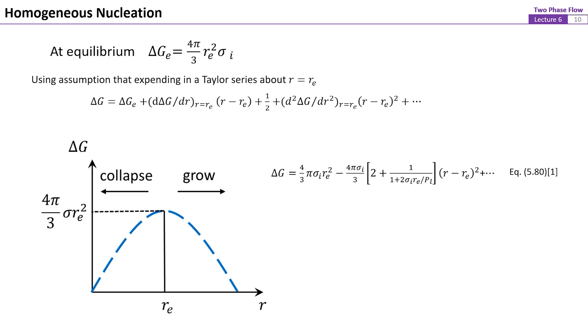Therefore, a bubble of radius R equals RE is in an unstable equilibrium. This means that if an embryo bubble of radius less than RE is formed in a metastable superheated liquid, the bubble is likely to collapse. If a bubble embryo has a radius greater than RE, it tends to grow rapidly.